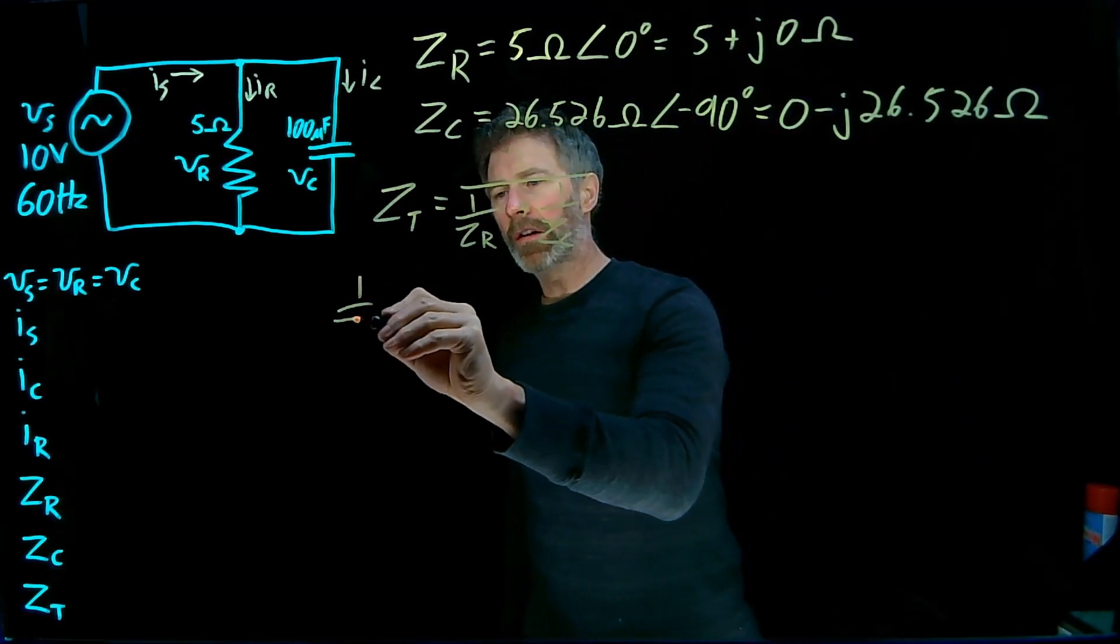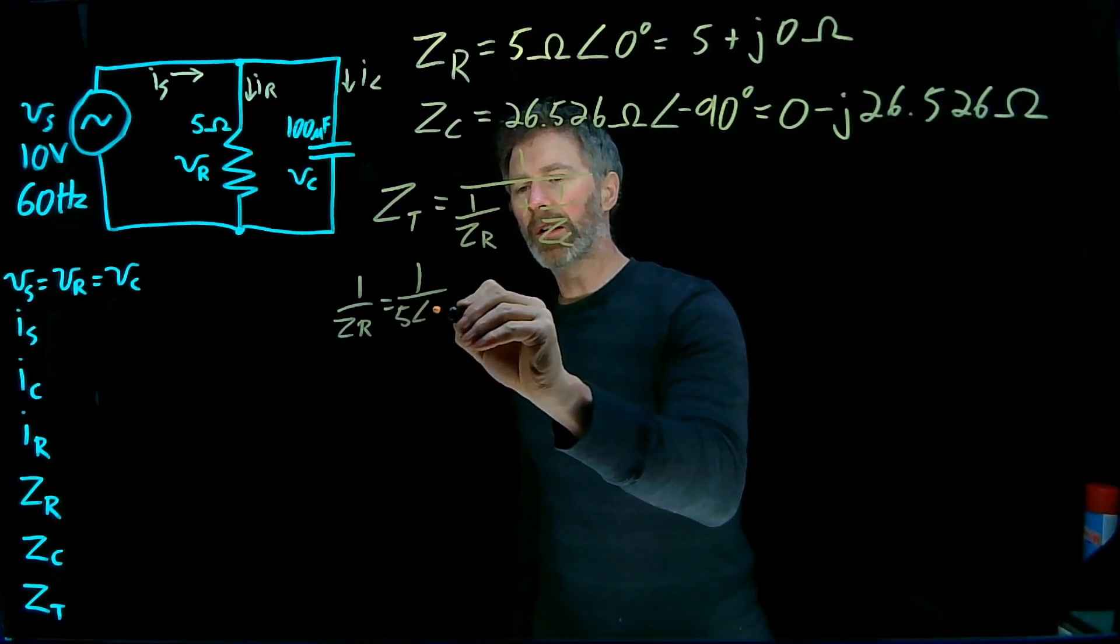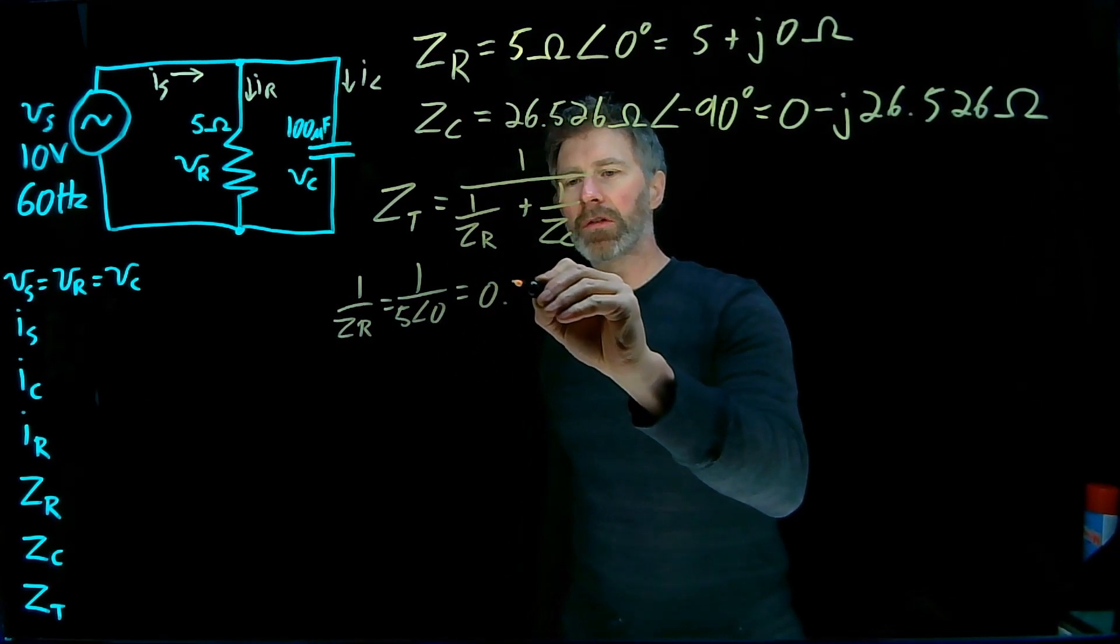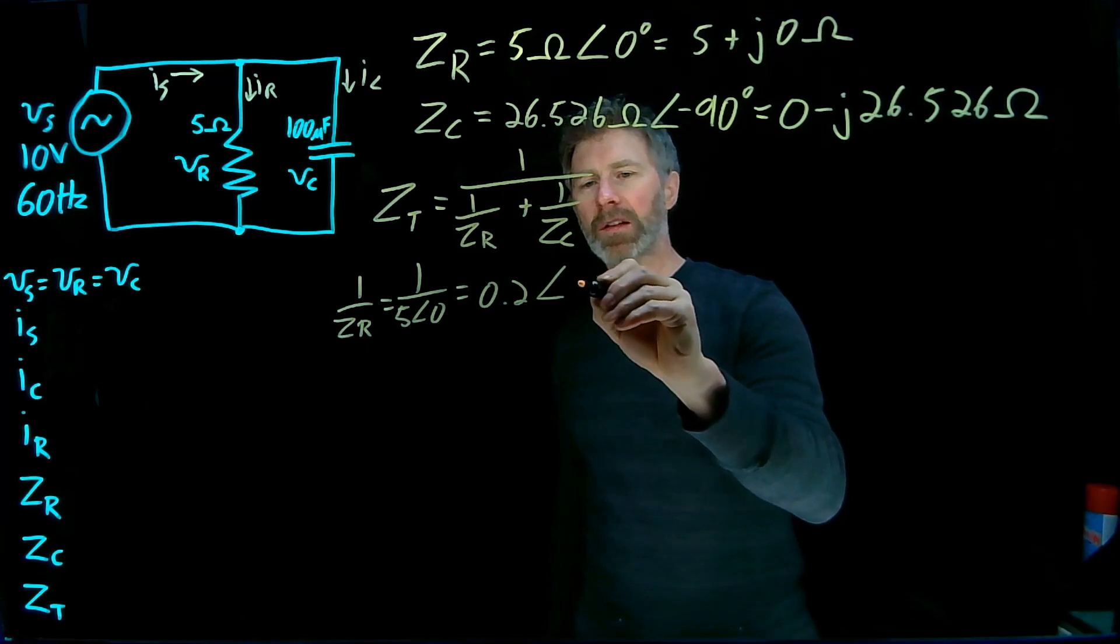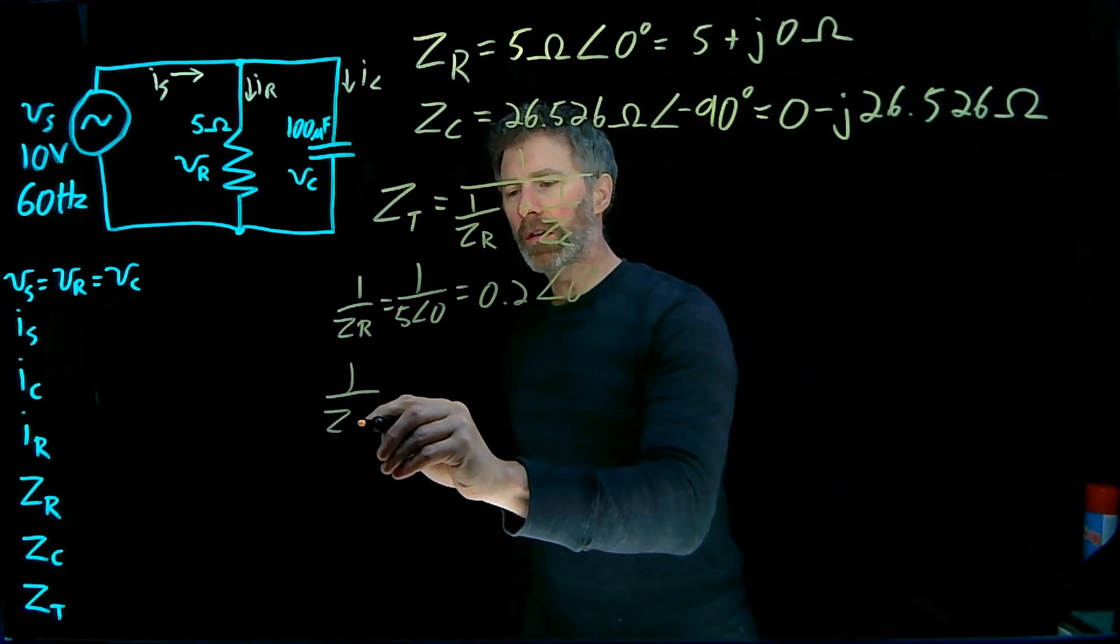And so 1/ZR, that's 1/(5 ohms ∠0°). So that's going to be 0.2 Siemens with a phase angle of zero degrees.